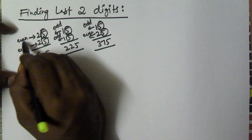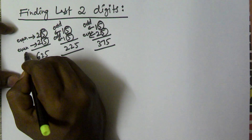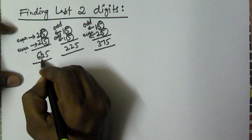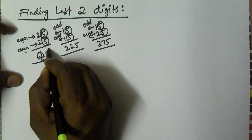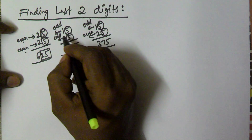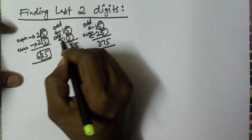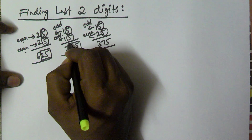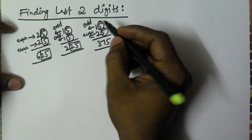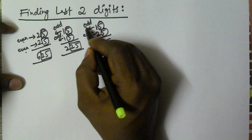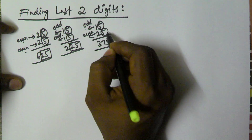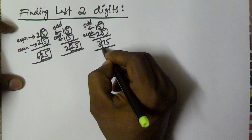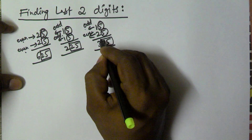So the rule is: even times even — the last 2 digits are going to be 25. Odd times odd — the last 2 digits are also going to be 25. If odd times even, the last 2 digits are going to be 75.